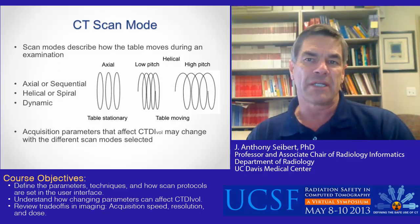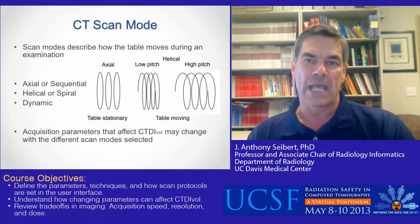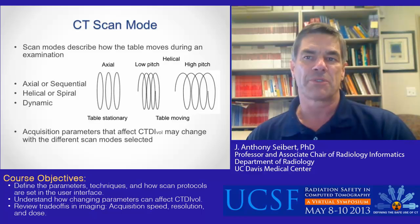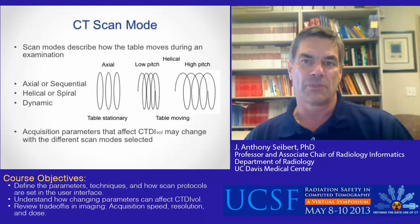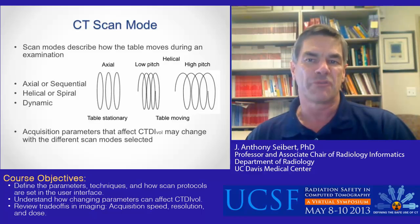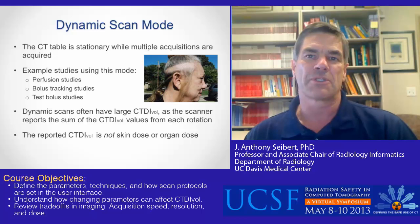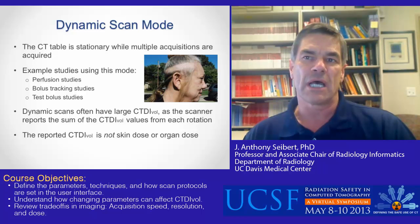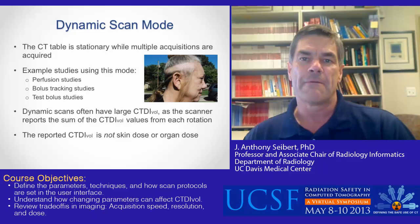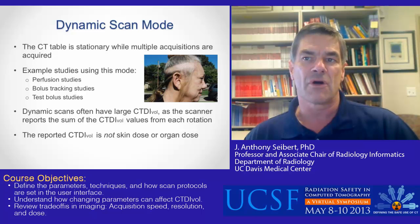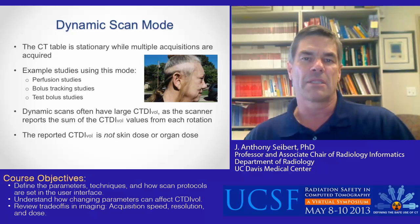The CT scan mode can be divided into three areas. Axial or sequential acquisition acquires data with the table stationary. Helical or spiral acquisition acquires image data with the table moving with respect to the collimated beam width. Dynamic acquisition acquires temporal image data at one position with the table stationary, but can be operated in a shuttle mode where the table quickly moves to a different position to image a different tissue volume and then moves back, repeating the scans over a period of time. Dynamic scan mode is used for perfusion, bolus tracking, and test bolus studies. Because the tube can be operated in the same position over an extended time, high radiation dose can be delivered, as exemplified by the hair loss of a patient undergoing a CT perfusion of the head. The CTDI vol is often reported as the sum of the CTDI vol from each rotation, and it is important not to assume that the CTDI vol is the skin or organ dose, which can be smaller or larger depending upon the particulars of the study.